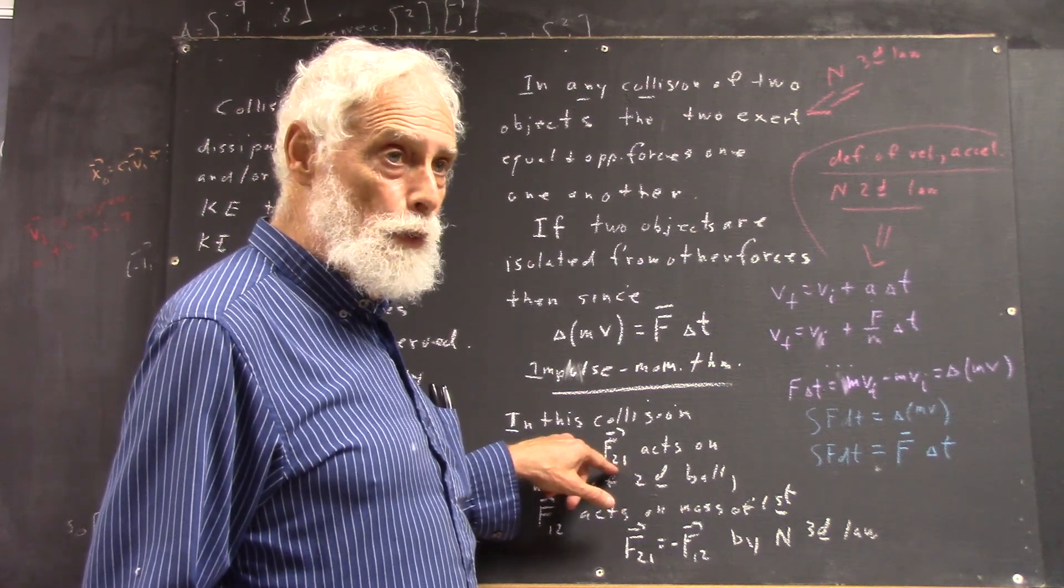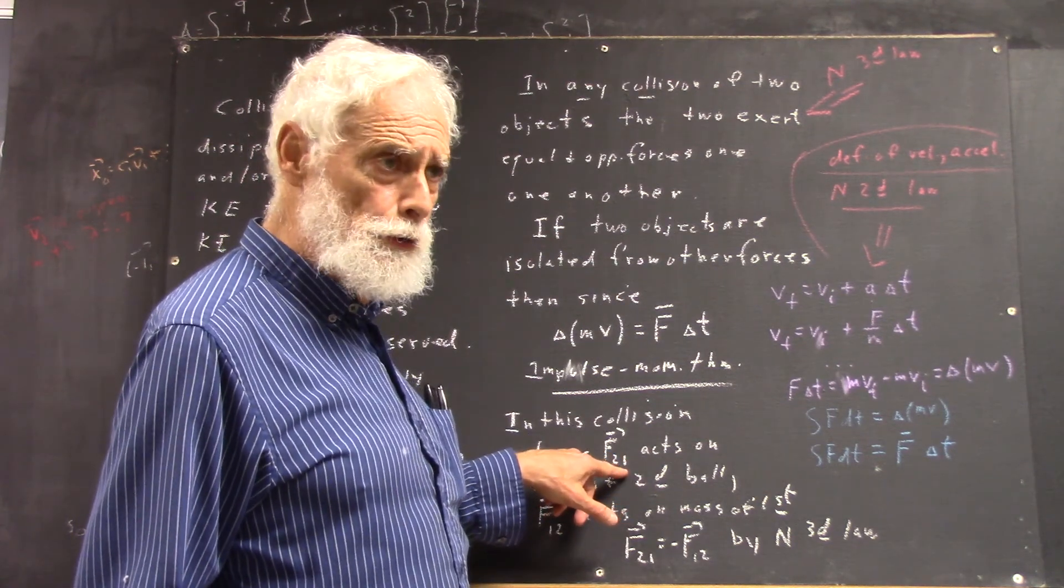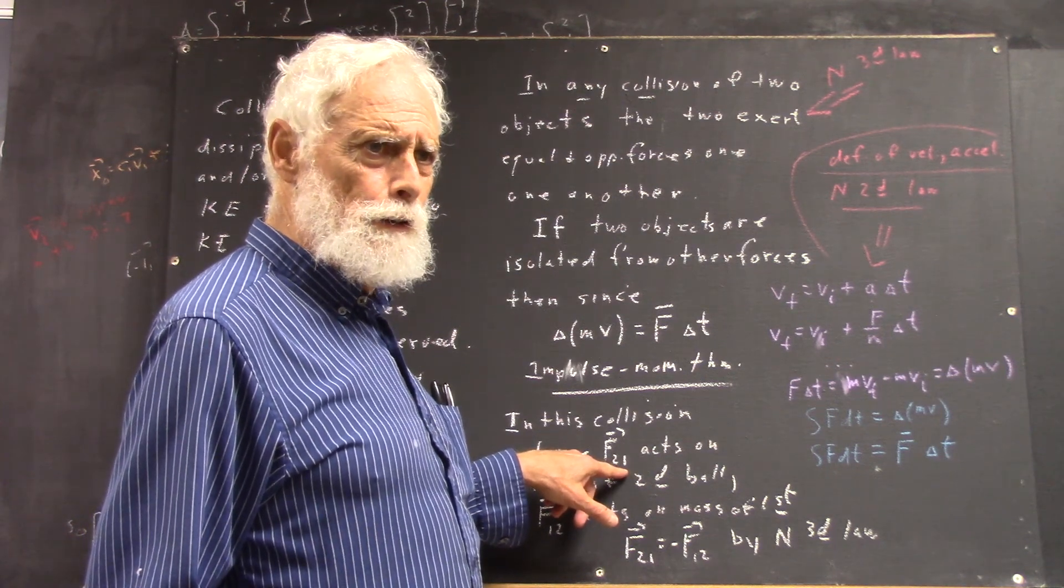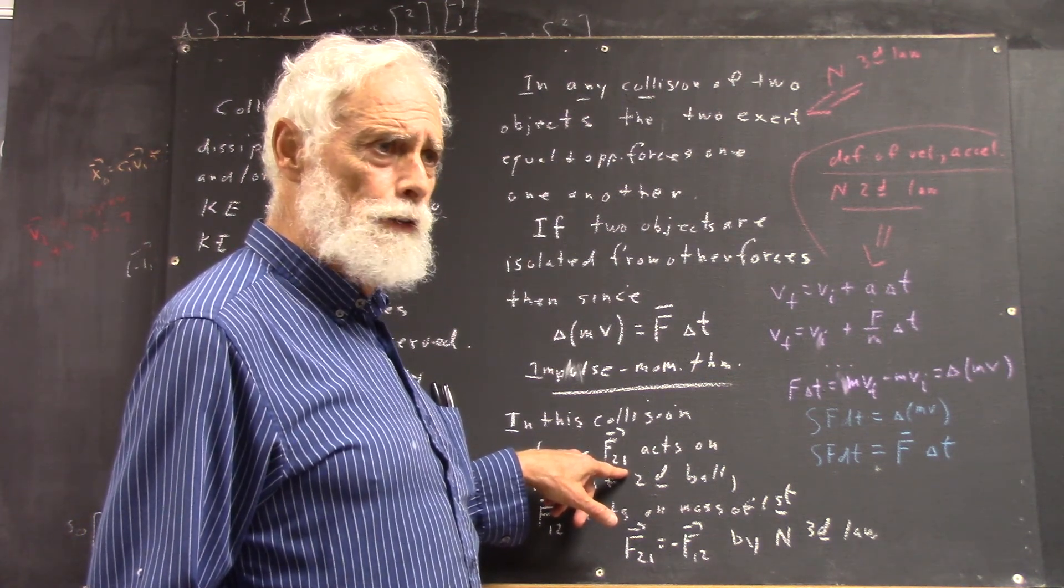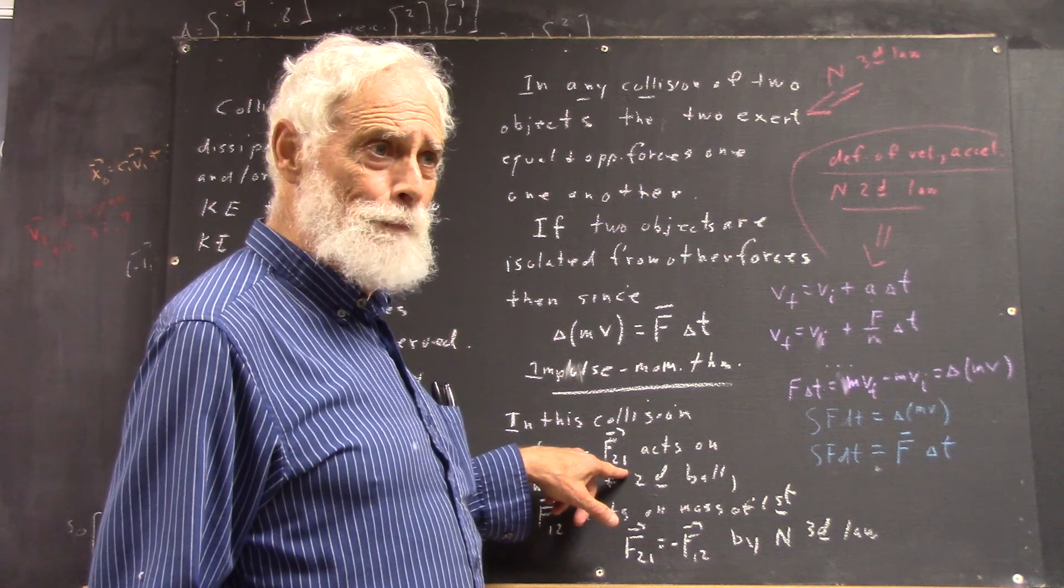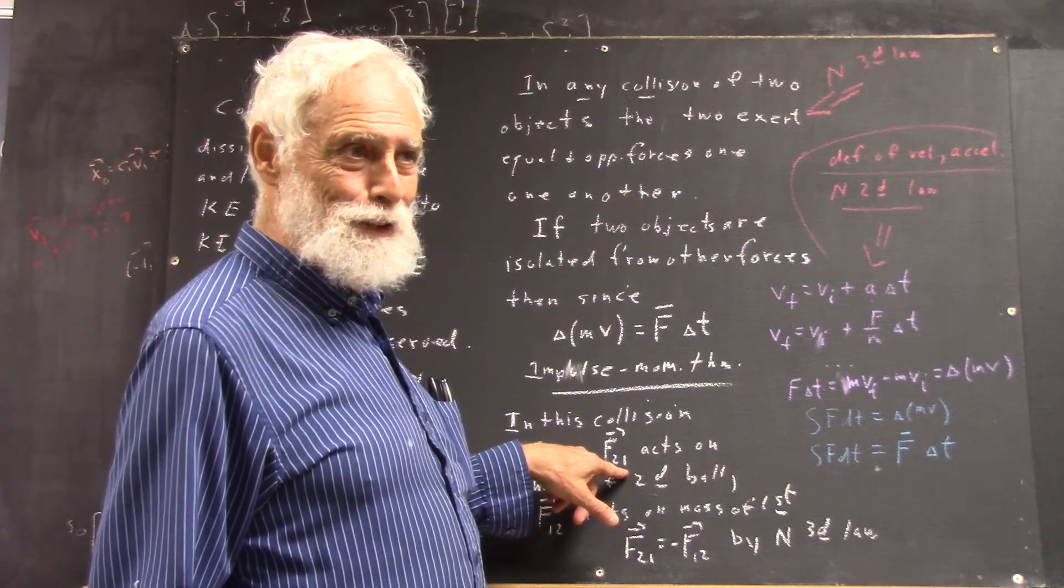But I'm saying F2-1 is a force that acts on ball 2, and it's exerted by ball 1. So it's by ball 1 on ball 2. I want to write it as 1-2. And very early in my physics education, I got confused in these subscripts, and I've never been able to get over that.